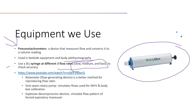Other calibration devices include the rotometer, which is a flow-generating device. Unlike the super syringe, it's automatic and doesn't rely on human power, making it better for reproducing consistent flow rates. There's also the sine wave rotary pump, which simulates the flows used during the MVV — maximum voluntary ventilation — test, where the patient breathes fast and deep. The sine wave rotary pump is useful for calibrating that test and for body box calibration.